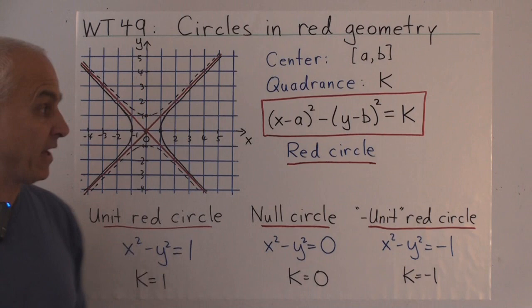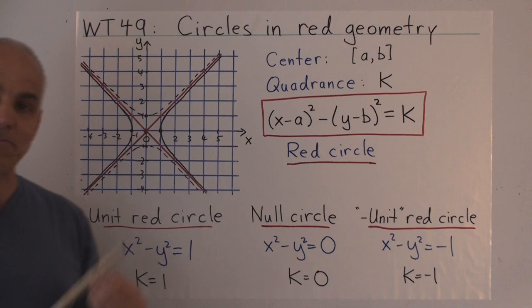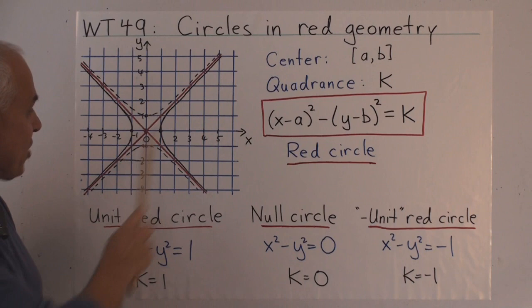Let's have a look at a special case when we simplify things by choosing the center to be the origin (0,0). In this case, things simplify. We get x² - y² = K, and the nature of what we get depends on the K.